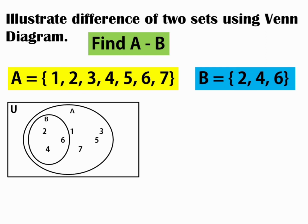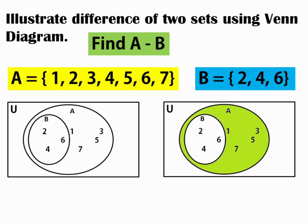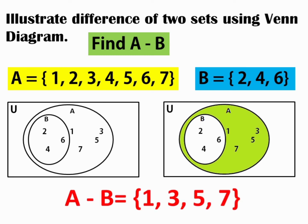How can we get the difference between set A and B? Remember, to get the difference, it should be the elements found in A without the elements found in B. So, all elements of B found in A will be removed. To illustrate it in a Venn diagram, the shaded region will be your answer. As you can see, we removed the elements of B that can be found in A. Therefore, A minus B is equal to {1, 3, 5, 7}.